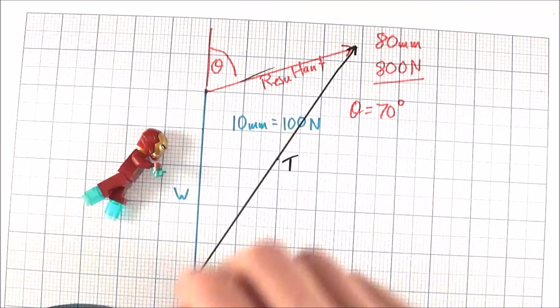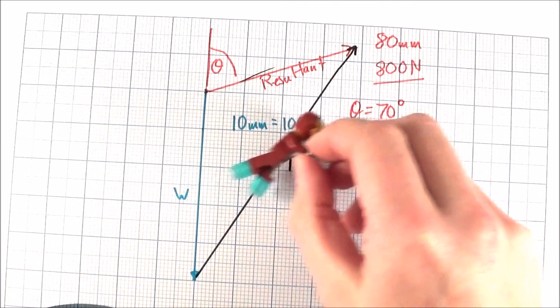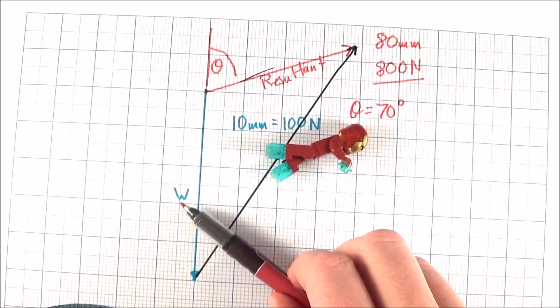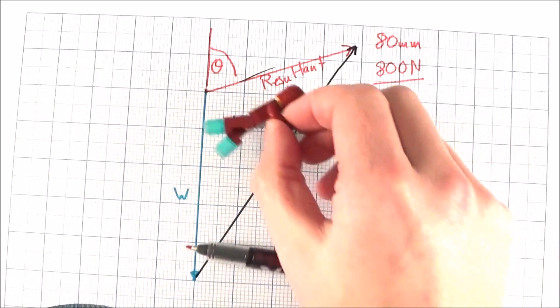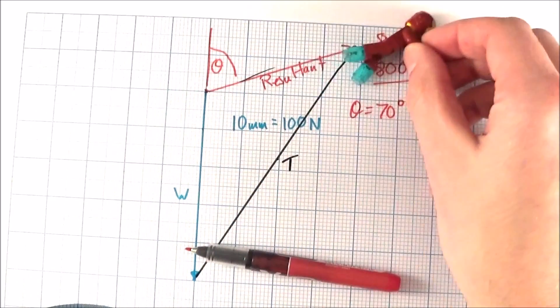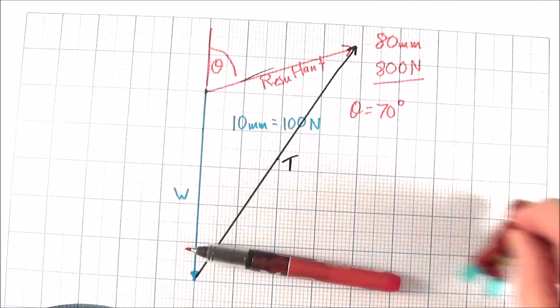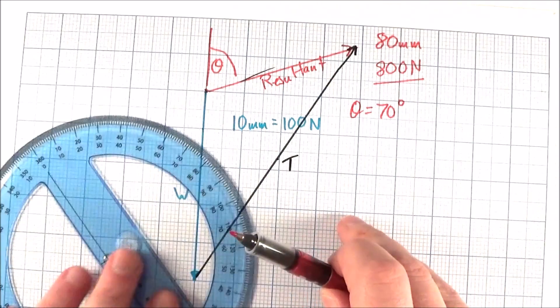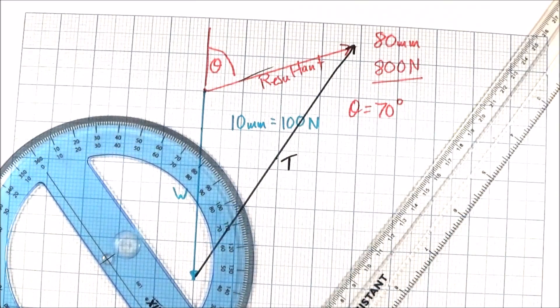And if we know maybe perhaps the mass of Iron Man, which I guess we could work out if we know his weight of the thousand, we can maybe work out his acceleration and the direction he accelerates in. So that's pretty much it: scale drawing, protractor, ruler, and a pencil.